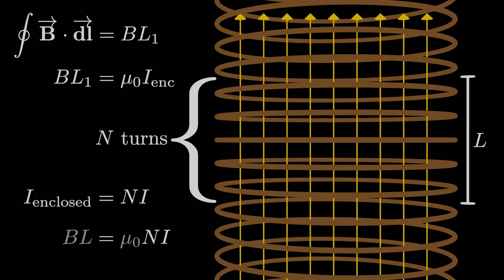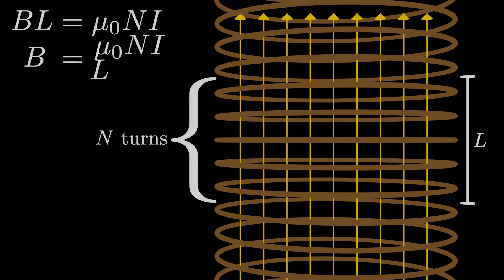Now we can plug that in for I_enclosed, and we have B times L₁ is equal to μ₀ times capital N times I, which is the current through the solenoid. We'll just call the length of segment 1 equal to capital L, and just dividing by L gives us our final answer. The magnetic field through the inside of the solenoid is parallel to the axis of the solenoid and has a magnitude of μ₀ times capital N, the number of turns within some length, times the current through the solenoid I, all divided by that length L.